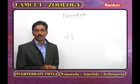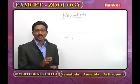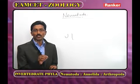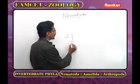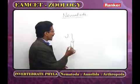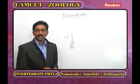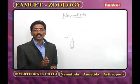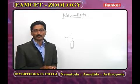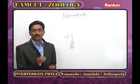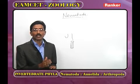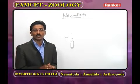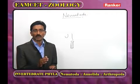In Nematoda, the body organization is organ-system level. In this phylum, we observe a tube-within-tube body organization — the body wall forms the outer tube, and the alimentary canal forms the inner tube. From Nematoda onwards, the alimentary canal has both mouth and anus, forming a complete alimentary canal, which continues up to human beings.